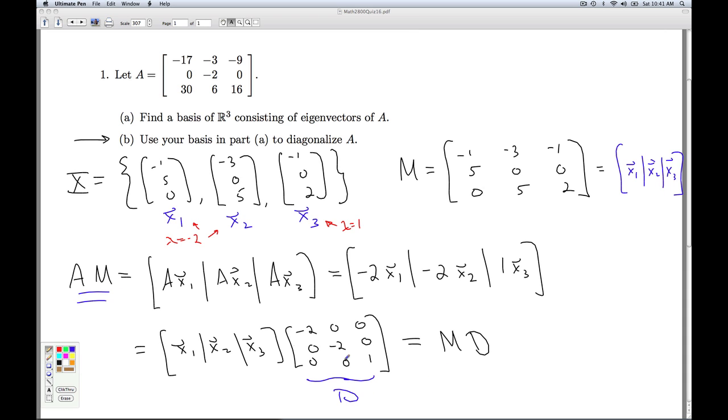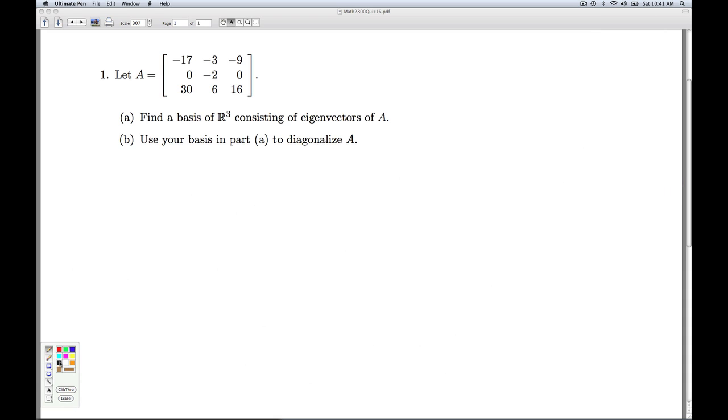So I get A times M is M times D. So to diagonalize M, I'm going to multiply both sides by M inverse. So if A times M equals M times D, that's the same as saying M times D equals A times M. So D then equals M inverse A M. So you can check the diagonal matrix, negative 2, 0, 0, 0, negative 2, 0, 0, 0, 1.